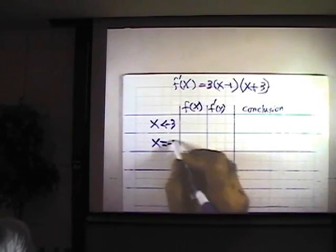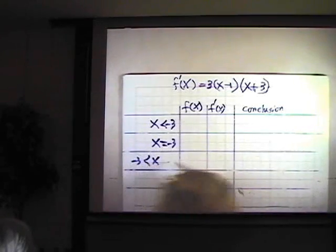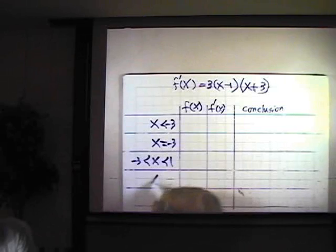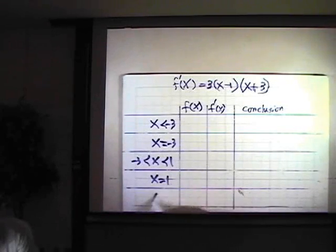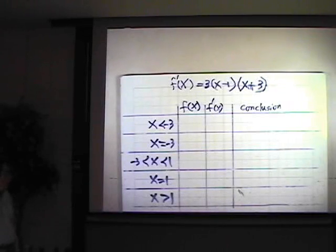Then x equals negative 3, x greater than negative 3 but less than 1, x equals 1, then x greater than 1. Those are the intervals I want to determine the signs of f prime of x.